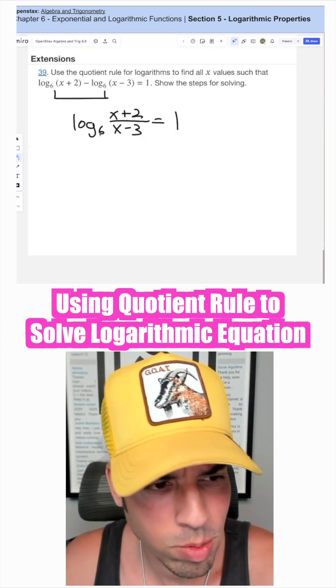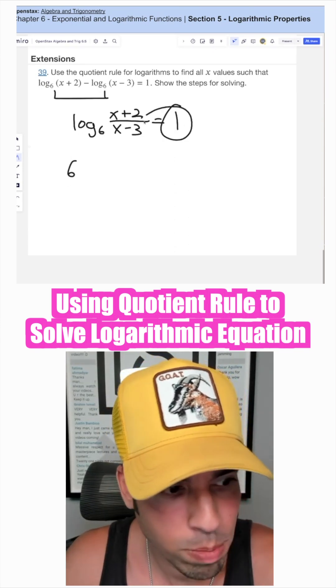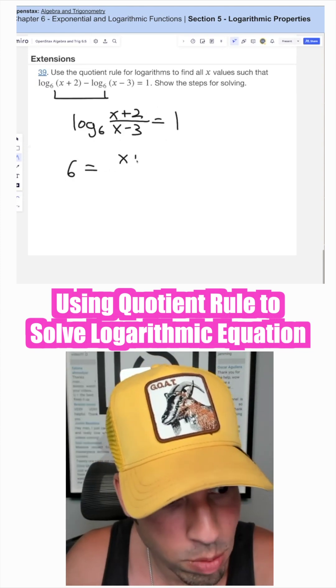to do to solve this is convert it to its exponential equivalent, meaning I'm going to say six, which is the base to this power, to the first power, which is just six, equals x plus two over x minus three.